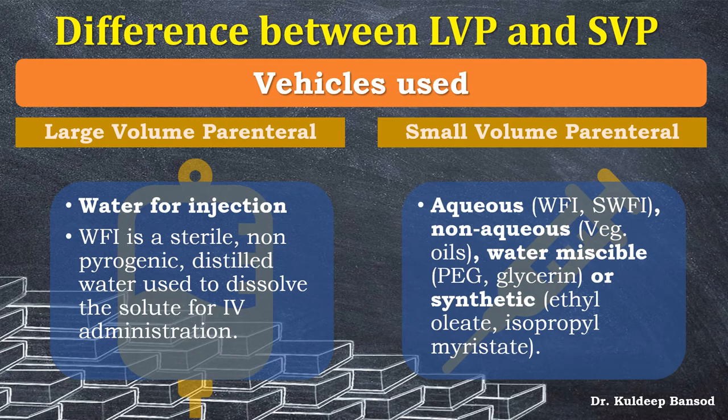Another difference is the vehicle used. In large volume parenterals, water for injection is specifically used as a vehicle — it is a sterile, non-pyrogenic distilled water used to dissolve solutes for intravenous administration. In small volume parenterals, the vehicle may be aqueous (water for injection or sterile water for injection), non-aqueous like vegetable oils, water-miscible vehicles like PEG or glycerin, or synthetic vehicles like ethyl oleate or isopropyl myristate.